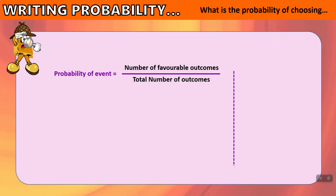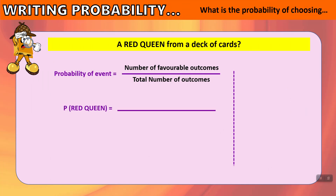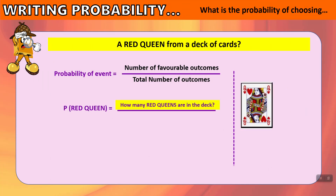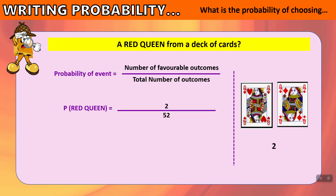What is the probability of choosing a red queen from a deck of cards? There are 4 queens, but only 2 are red — the queen of hearts and the queen of diamonds. So there's a 2 out of 52 chance — a 2 in 52 chance of getting a red queen when choosing a card from a deck.